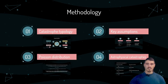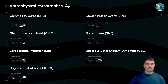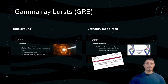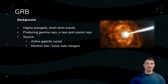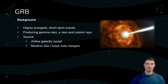Last in methodology, we will look at the astrophysical catastrophes in detail. We will be concentrating on the background information as well as the lethality modalities for every single catastrophe. First on the list are gamma-ray bursts. GRBs are highly energetic short-term events that produce gamma rays, X-rays, and cosmic rays. The source of origin is not yet completely understood, but is suspected to originate from active galactic nuclei powered by massive black holes like Sagittarius A in the center of our galaxy, as well as neutron stars and black hole mergers.